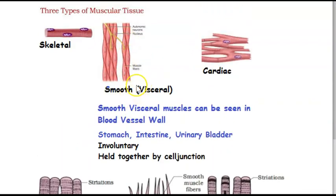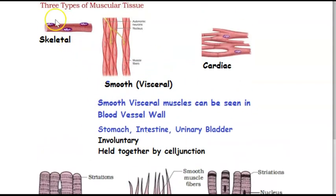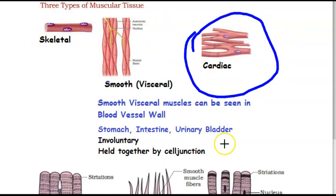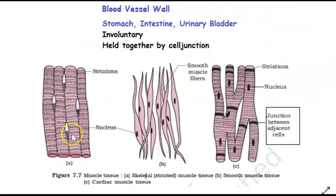Smooth muscle is visceral — found in the stomach, intestine, and urinary bladder. It is involuntary; you cannot consciously control it. Skeletal muscle is voluntary — you can contract your biceps or triceps at will. Cardiac muscle is also involuntary. Looking at microscope images: skeletal muscle shows clear striations, smooth muscle looks smooth with no striations, and cardiac muscle is also present.